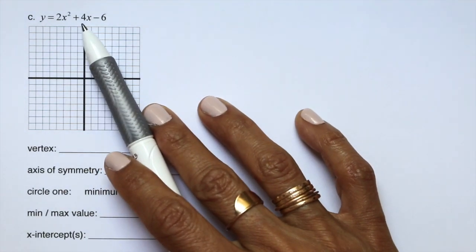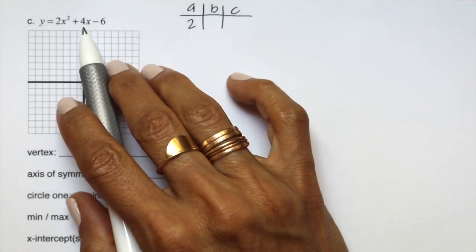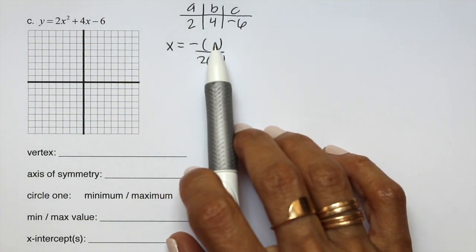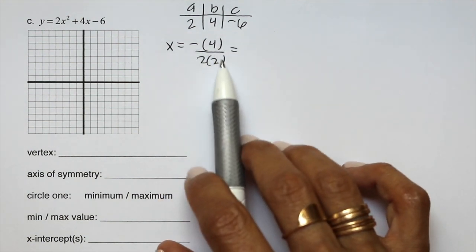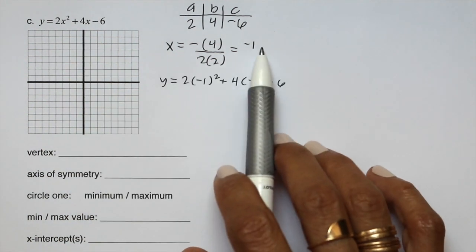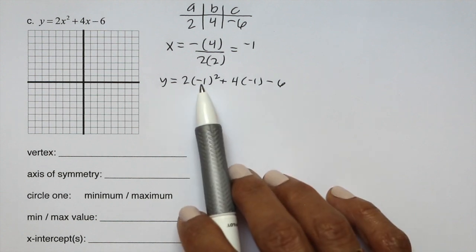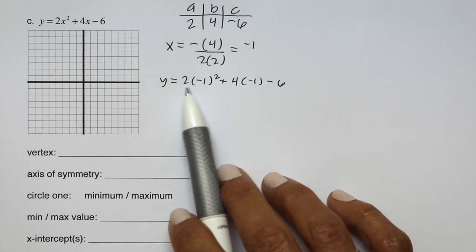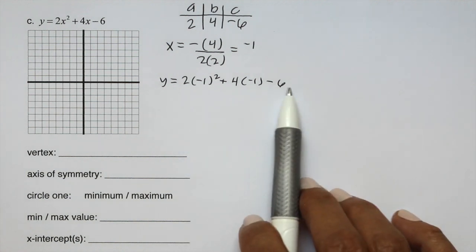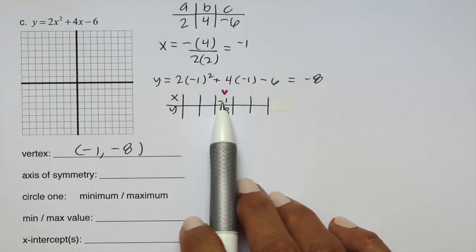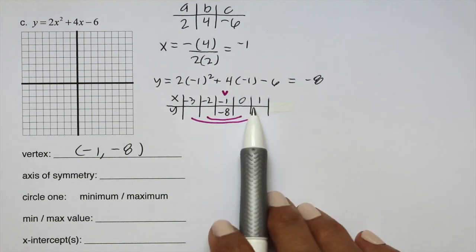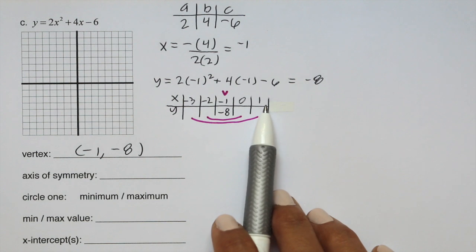The last example: y equals 2x-squared plus 4x minus 6. a equals 2, b equals 4, c equals negative 6. To find the vertex: x equals negative 4 over 2 times 2, giving negative 4 over 4, which equals negative 1. Plug negative 1 back in — use parentheses since the value is negative. By order of operations, negative 1 squared is positive 1, times 2 is 2; then 4 times negative 1 is negative 4. So 2 plus negative 4 is negative 2, and negative 2 plus negative 6 is negative 8. Vertex is negative 1, negative 8.